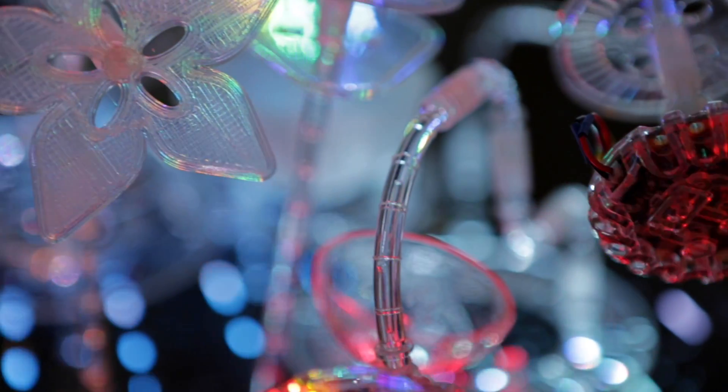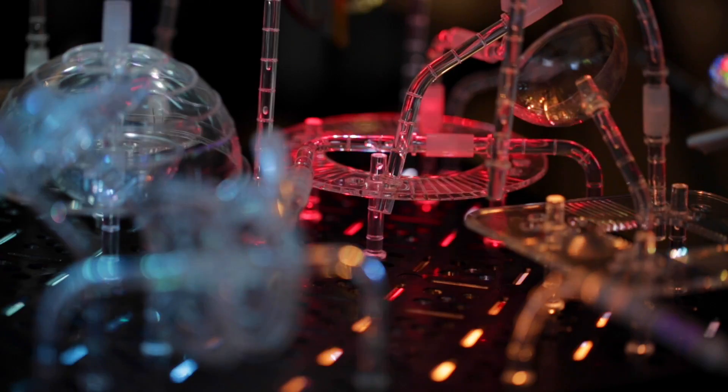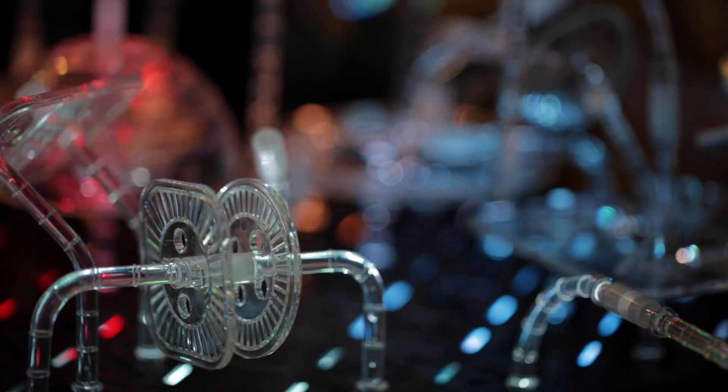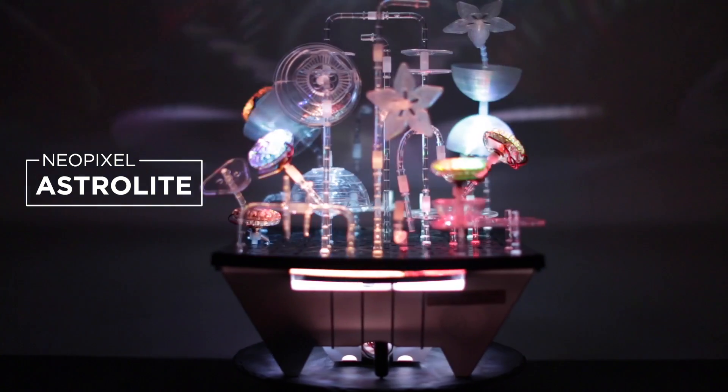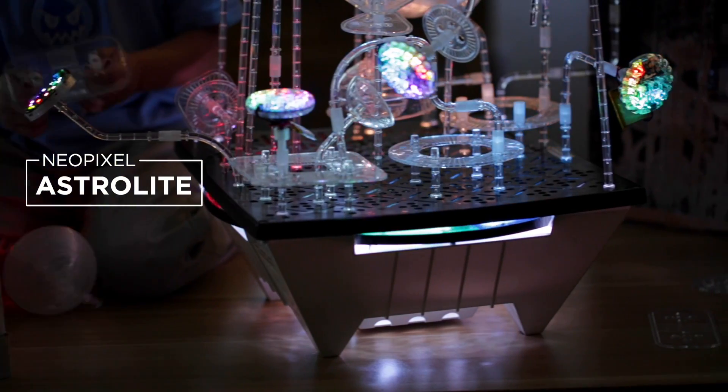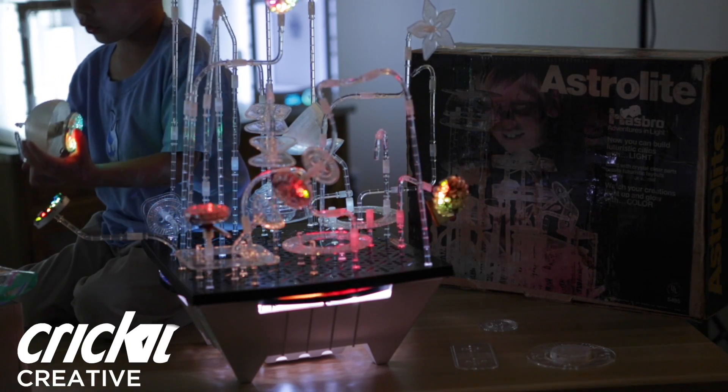In this project we're upcycling a classic construction kit from 1969. Astrolite was a building toy set made of clear tubes that snap fit together. In this project we're adding NeoPixels and motorizing the color wheel.